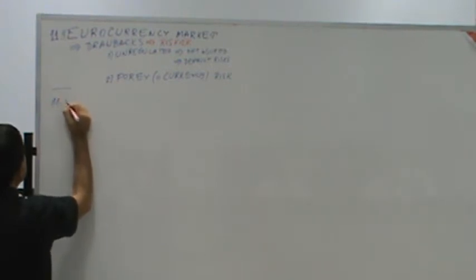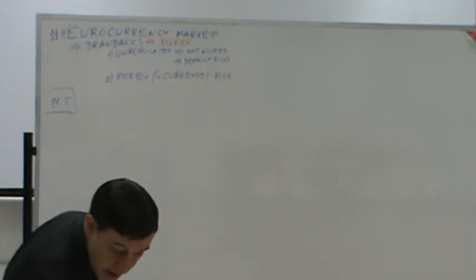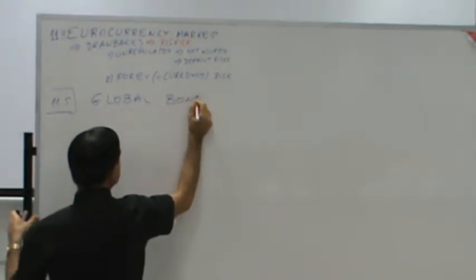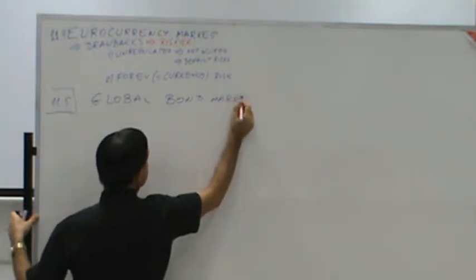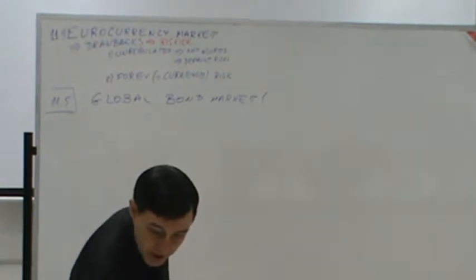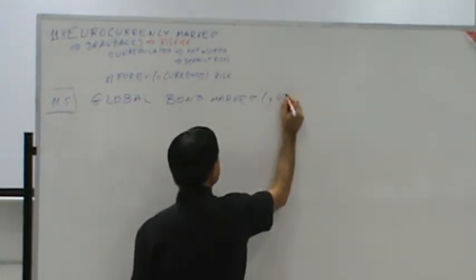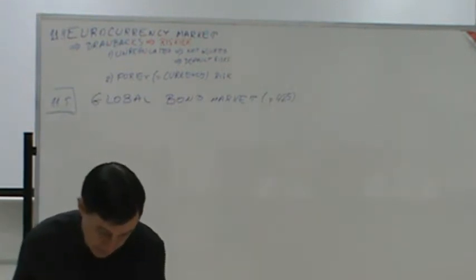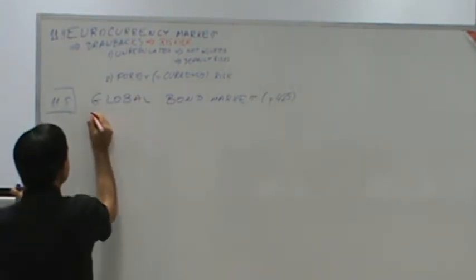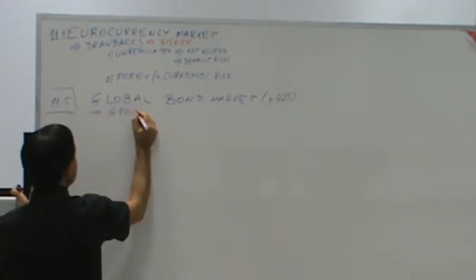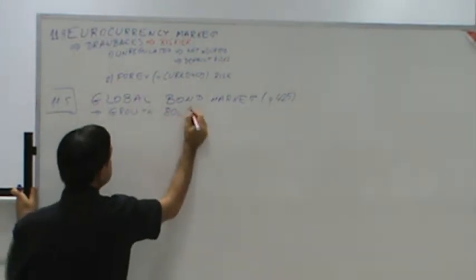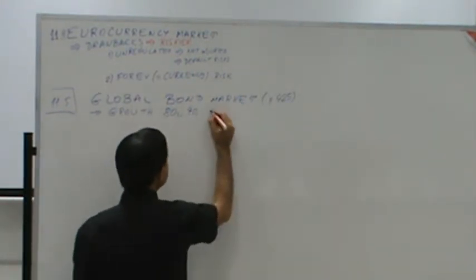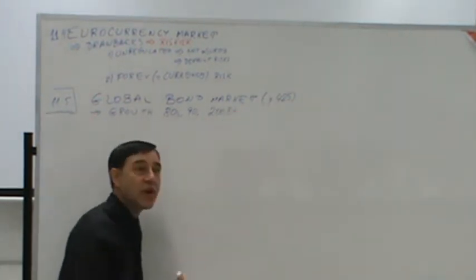Now we're to section 11-5, and section 5 is the global bond market. For your reference, the page is 425. So it's not a huge section. Huge growth in the 1980s, in the 1990s, but the biggest growth of the bond market was after the global financial crisis in 2008.